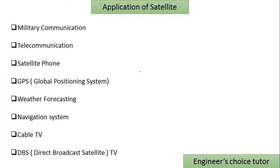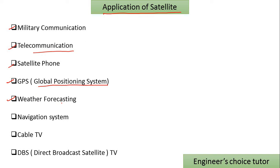Applications of satellites: First is military communication — in military communication, we use satellites to send signals to each other. Second is telecommunication. Third is satellite phones. Fourth is GPS — Global Positioning System. Fifth is weather forecasting — we also use satellites for weather forecasting.